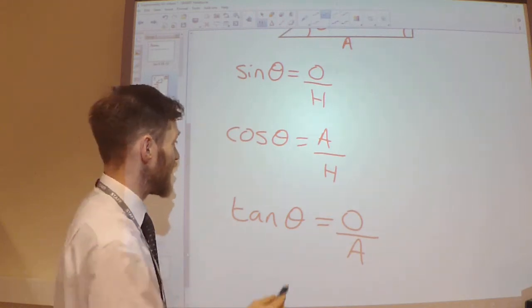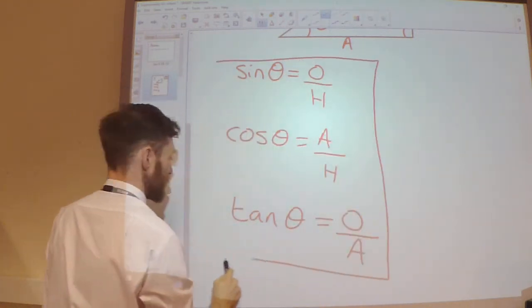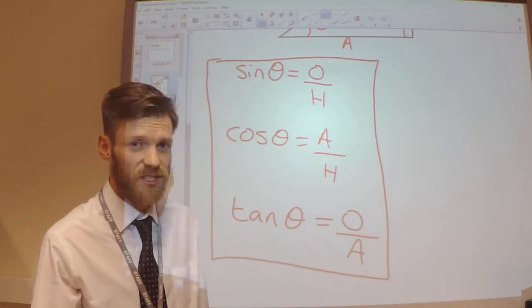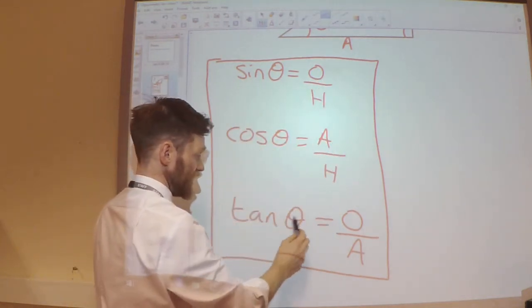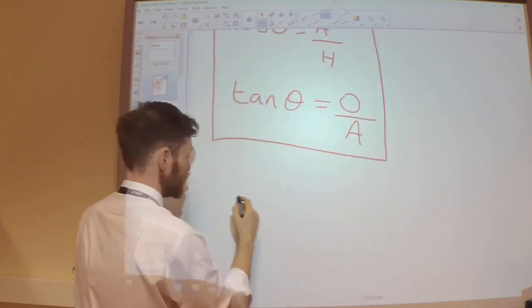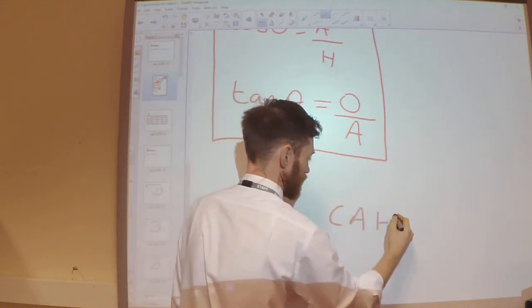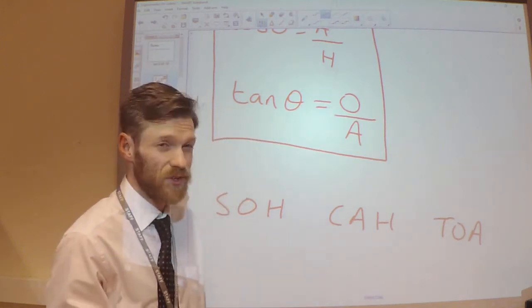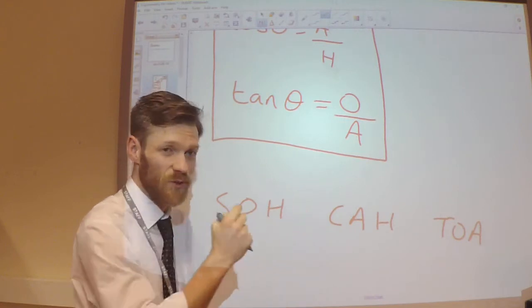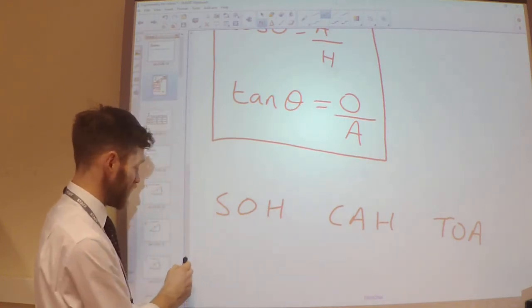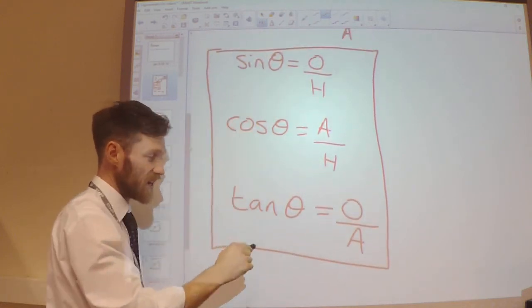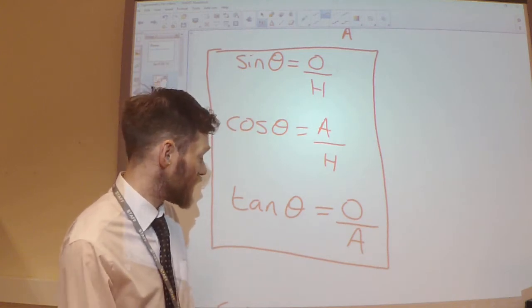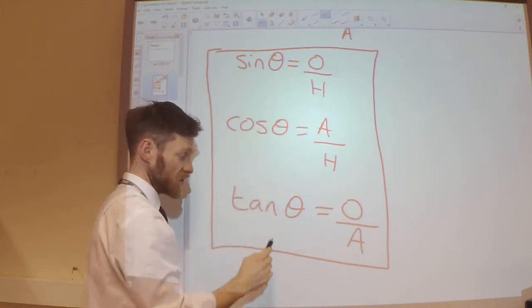That was how those three trigonometric functions were defined at GCSE, and you will have heard of SOHCAHTOA — S-O-H-C-A-H-T-O-A. There are different mnemonics and silly sentences using those letters to help you remember which way around these go. The important thing is you know that that is how each of these functions are defined.